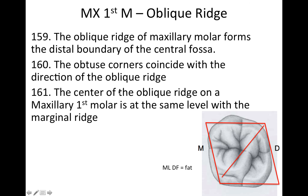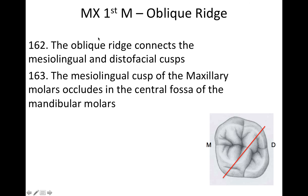The obtuse corners coincide with the direction of the oblique ridge. The center of the oblique ridge is at the same level as the marginal ridge — so the height of the marginal ridge equals the height of the center of the oblique ridge. The oblique ridge connects the mesiolingual and distofacial cusps. The mesiolingual cusp of the maxillary molar occludes in the central fossa of the mandibular molars.